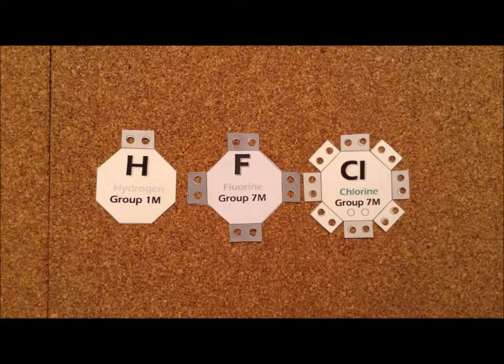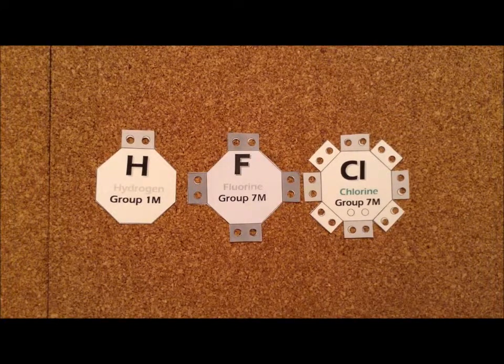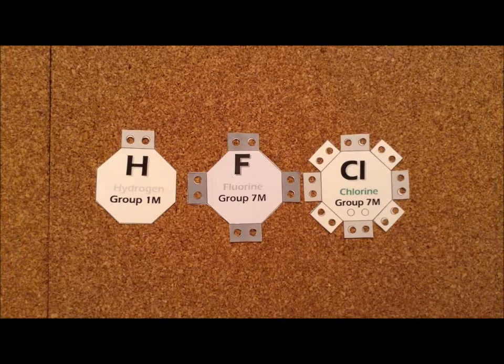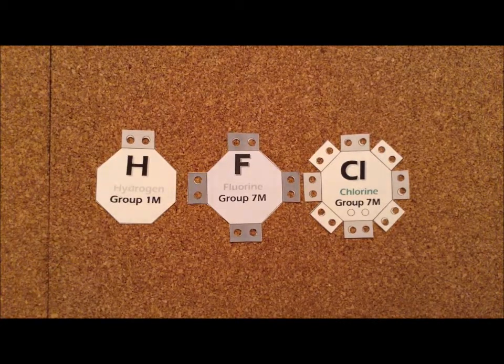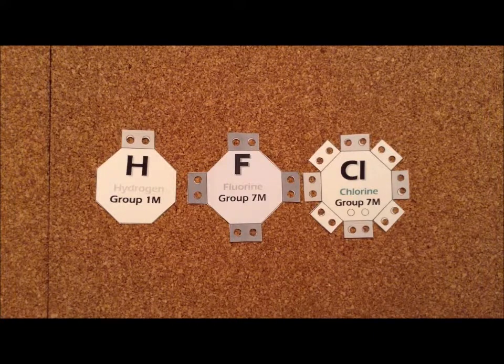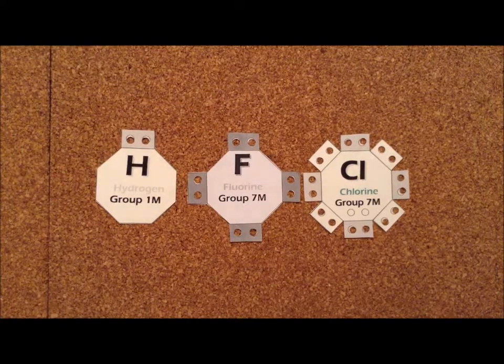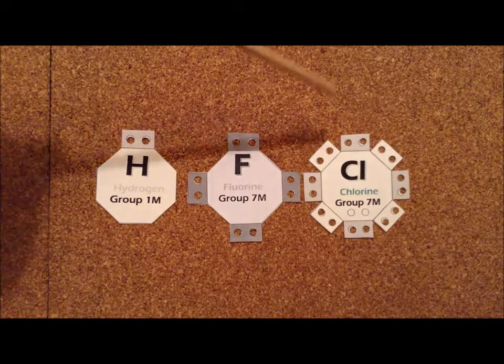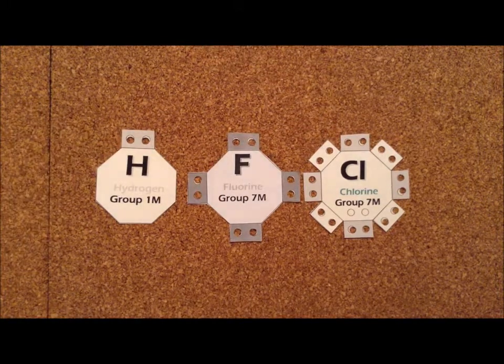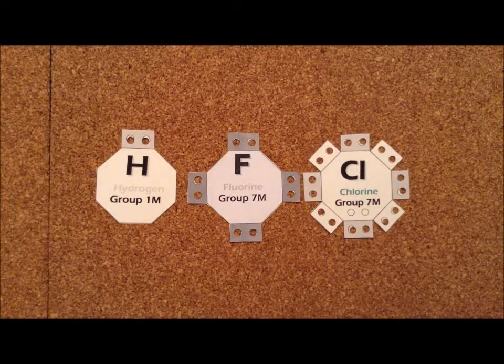Here we have three important chemical elements. The first one is hydrogen, and the second one is from the first row of the periodic table. Fluorine is from the second row of the periodic table, and chlorine on the right is from the third row of the periodic table.